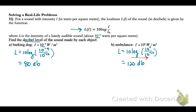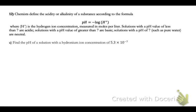Let's look at another real-life problem. Number 11. Chemists define acidity or alkalinity of a substance according to this formula, where H is the hydrogen ion concentration measured in moles per liter. It tells about if substances are acidic or basic based on their pH level.